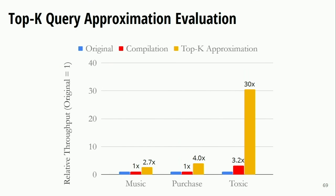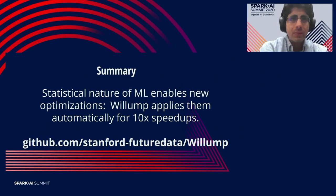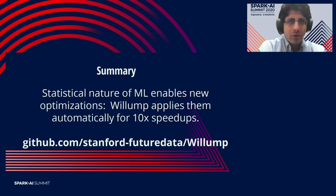For the top-K query approximation on top-K workloads, we find it improves throughput by anywhere between 2.7x and 10x against all baselines. In conclusion, the key takeaway is that it's possible to dramatically improve the performance of ML inference through statistical optimizations such as approximation, and that we can do this easily and automatically using simple algorithms like the Willump algorithms described here. If you're interested in learning more, please see our source code on GitHub or look at our paper published in MLSys earlier this year. Thank you.